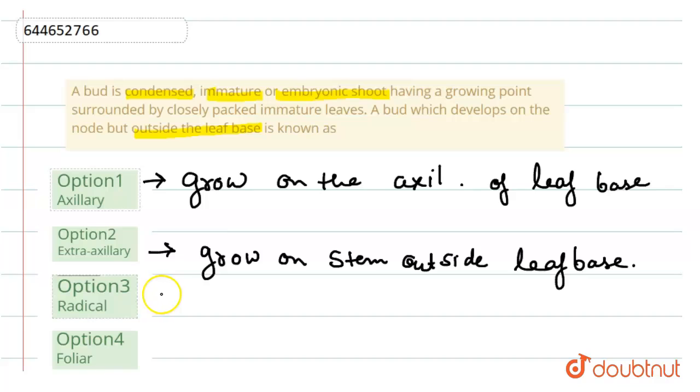And the third option is radical. Radicals are those buds which are responsible for vertical growth of the plant.